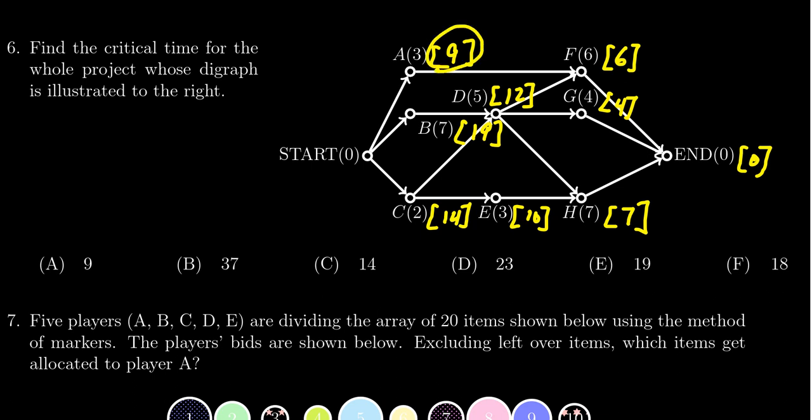Comparing these, you have nine, you have nineteen, and you have fourteen. The largest one is going to be nineteen, so that is the critical time of the entire project. We see that the correct answer is E. The critical time is nineteen.